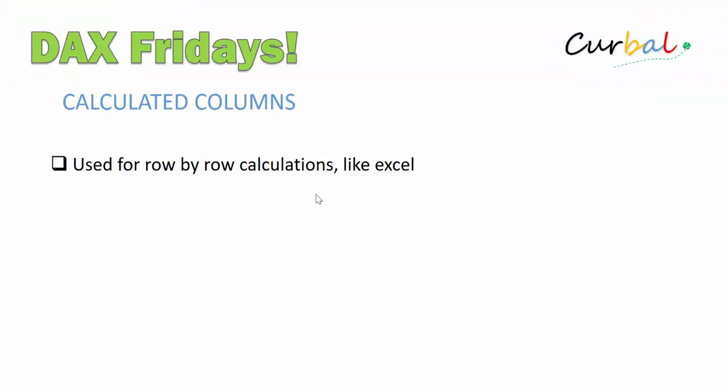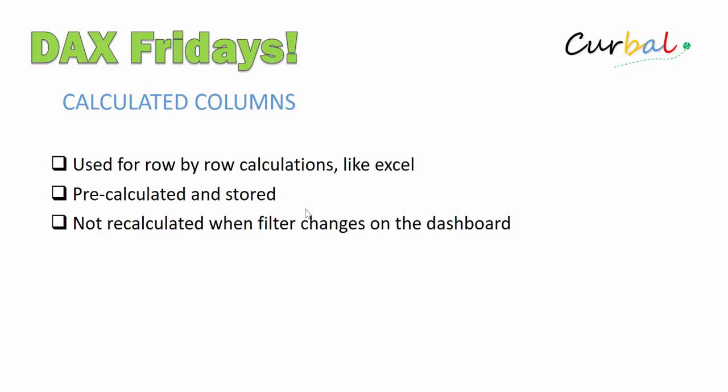Now we know what it means by row-by-row. Something that you need to understand about calculated columns is they are pre-calculated and stored in memory. Pre-calculated means that for you to be able to work with that column, Power BI will calculate it for you before anything else happens. So when you load a new model, the calculated column will get calculated so it is available. When the user changes the filters on the dashboard, the calculated columns do not get recalculated.